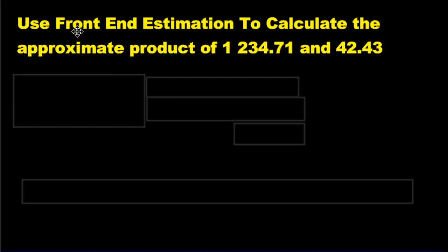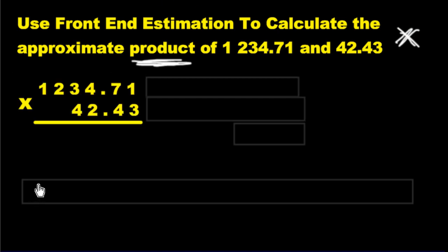How about using front-end estimation to calculate the approximate product of these two numbers? And what do we know about product? Product is the key word. Product means multiply. It means times. So we'll take those numbers and we have to multiply them.